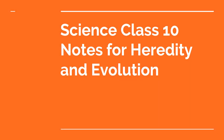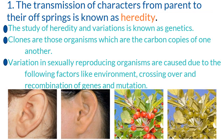Science Class 10 Notes for Heredity and Evolution. The transmission of characters from parent to their offsprings is known as heredity. The study of heredity and variations is known as genetics. Clones are those organisms which are the carbon copies of one another. Variation in sexually reproducing organisms are caused due to factors like environment, crossing over and recombination of genes, and mutation.